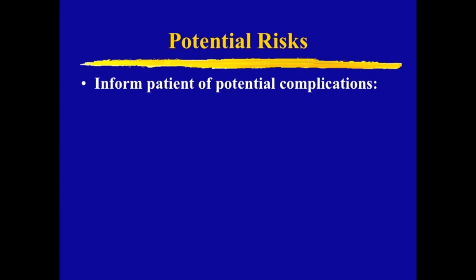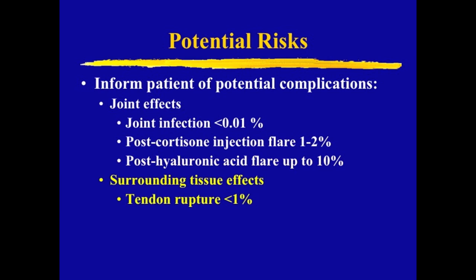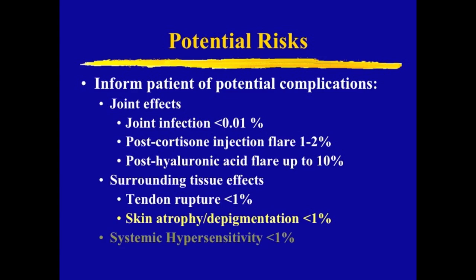Potential risks of cortisone injection are the same regardless of joint site. Joint infection is rare, on the order of 1 to 2 per 10,000 injections. Post-injection flare from synovial inflammation can be much more common after hyaluronic acid than cortisone. Other rare potential risks of cortisone injection are tendon rupture, skin atrophy or depigmentation, and rarely systemic hypersensitivity.